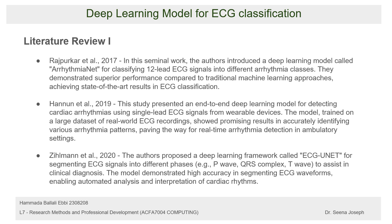Then Hanun in 2019 presented a new article in which an end-to-end deep learning model for detecting cardiac arrhythmias using a single lead instead of 12 leads was introduced. This was an innovation in the field, as it introduced the option of achieving high accuracy in detecting and classifying different ECGs without the requirement of 12 inputs.